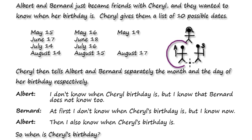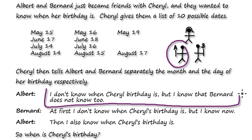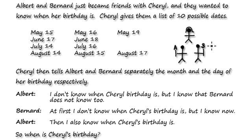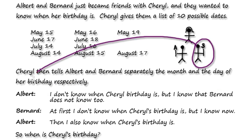The minute Albert makes this statement, Barnard knows exactly when Cheryl's birthday is. Then Barnard makes this statement: "At first I didn't know Cheryl's birthday, but now I know."